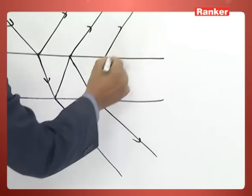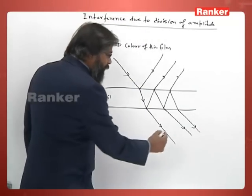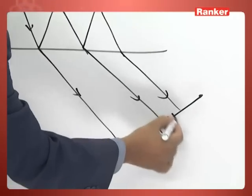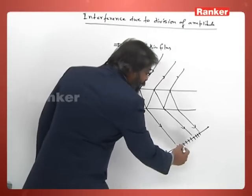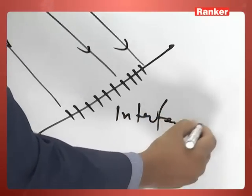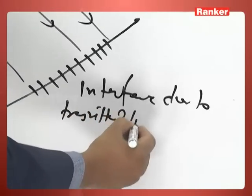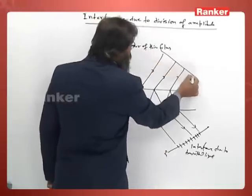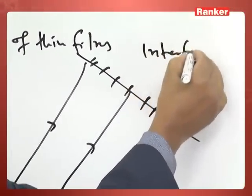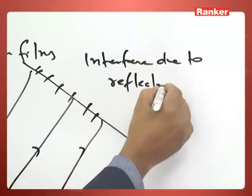The series of reflections and transmissions will be there. When we keep a screen here, then we will get an interference pattern in this region. That is interference due to transmitted light. And here if I will keep a screen, I will get an interference pattern that is interference due to reflected rays.